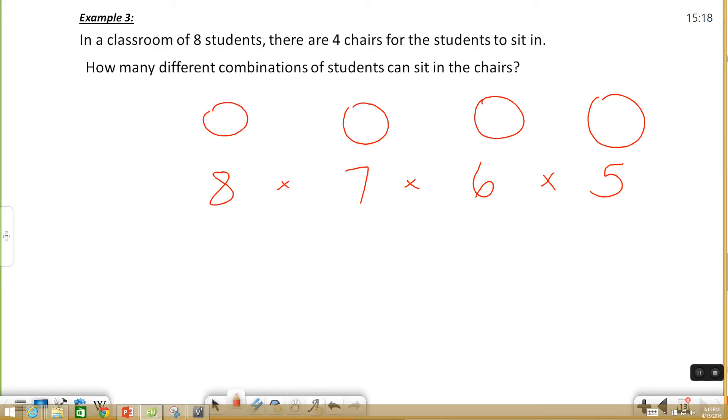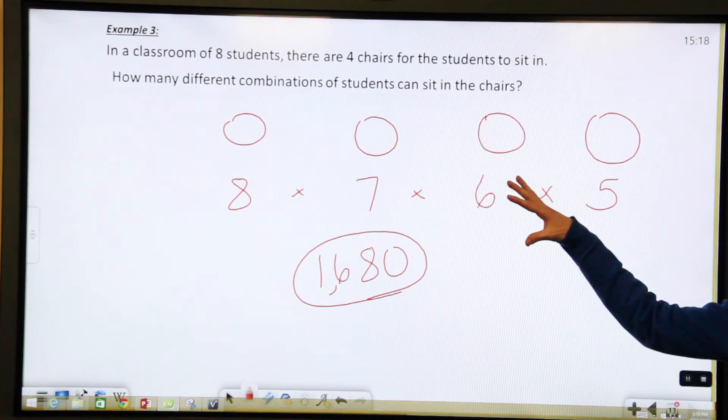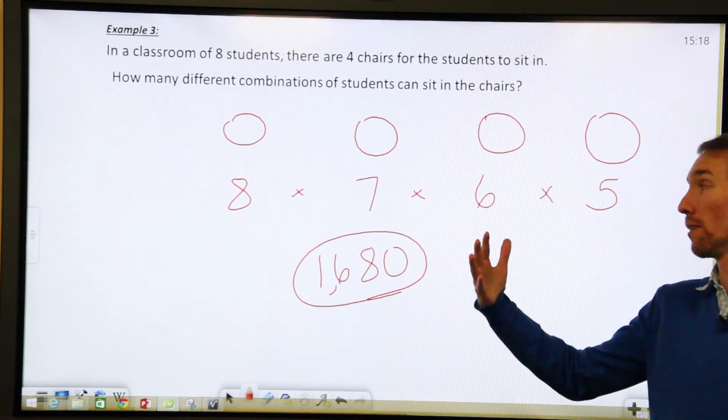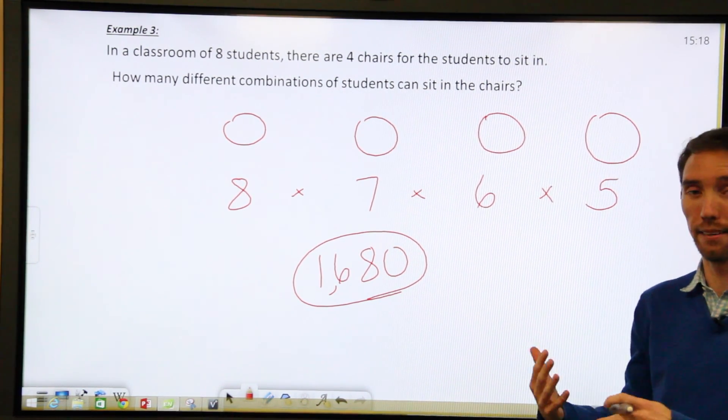Yes I did cheat a little bit. I did that in advance. So there are 1680 ways you can put eight people or a group of eight people into only four chairs. That's a crazy number for such a small scenario.